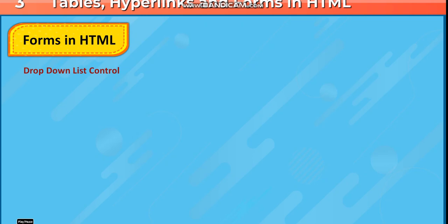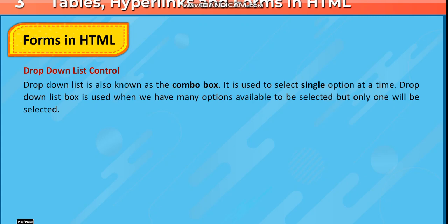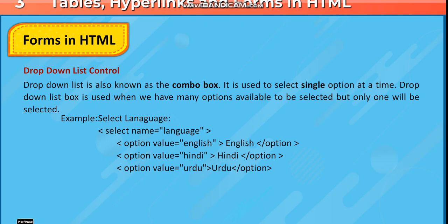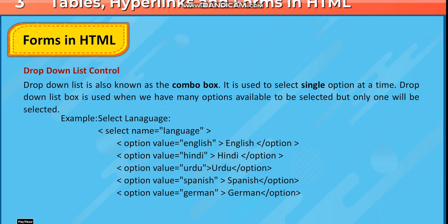Drop down list control: A drop down list is also known as the combo box. It is used to select a single option at a time, and is used when many options are available but only one will be selected. For example: Select language — select name="language", option value="English" English /option, option value="Spanish" Spanish /option, option value="German" German /option, option value="French" French /option, /select.